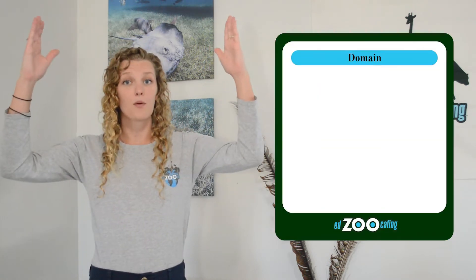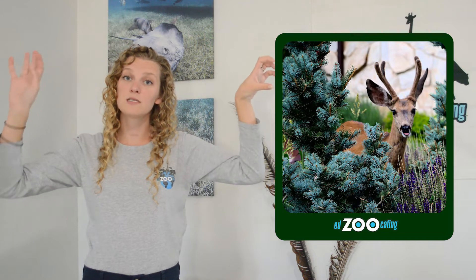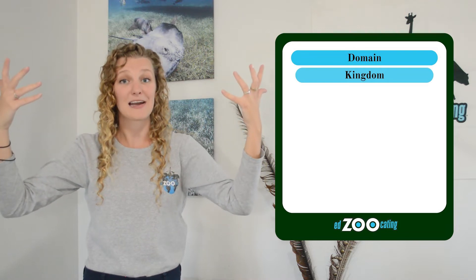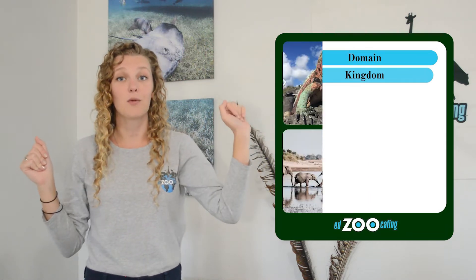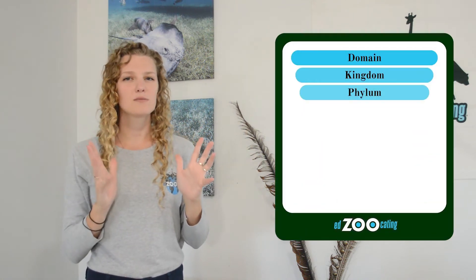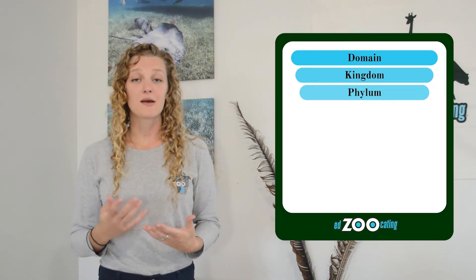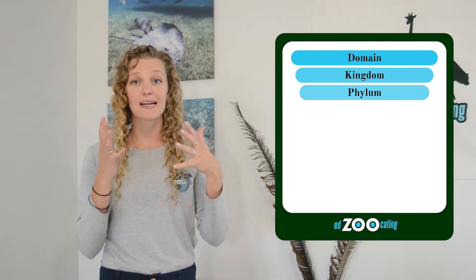If we start at the top, which we call our domain, these are our broadest groups. This is where we're going to be separating things like plants and animals from things like bacteria. We go one step more narrow — now we're in our kingdoms. This is where we're going to separate our animals from our plants. This is where we get the name animal kingdom from. One step below that, we have our phylums. And now we're going to focus mostly on the animal kingdom just so we can see how these groups narrow. The phylums are actually what's going to separate our vertebrates — our animals with the backbone — from our invertebrates, our animals that don't have a backbone.